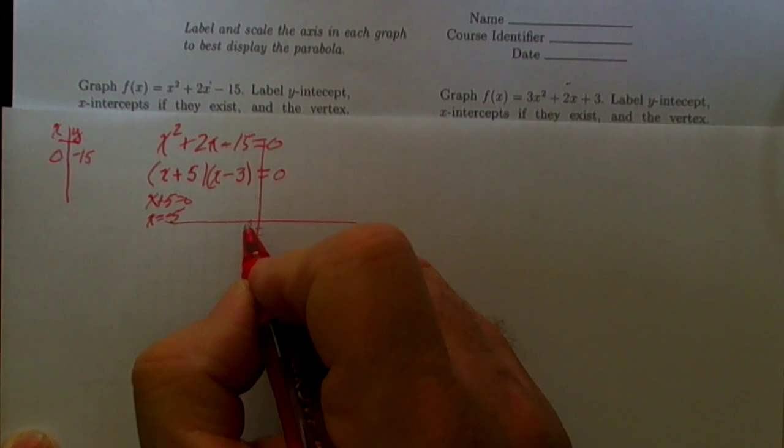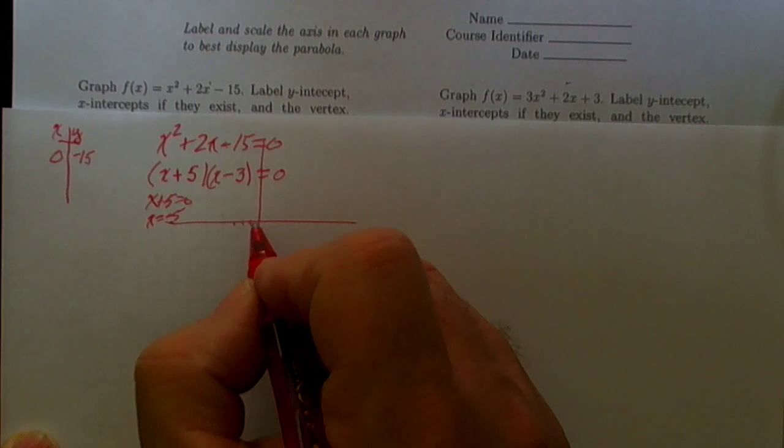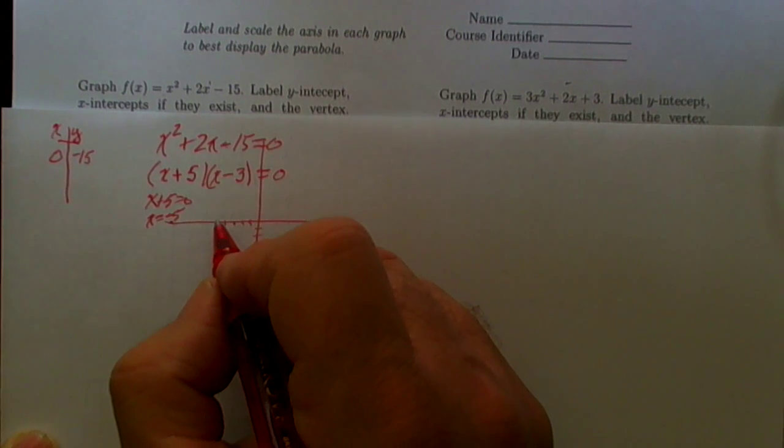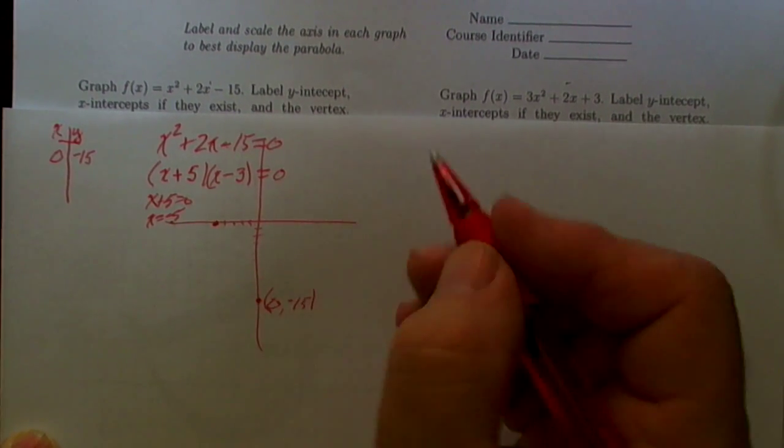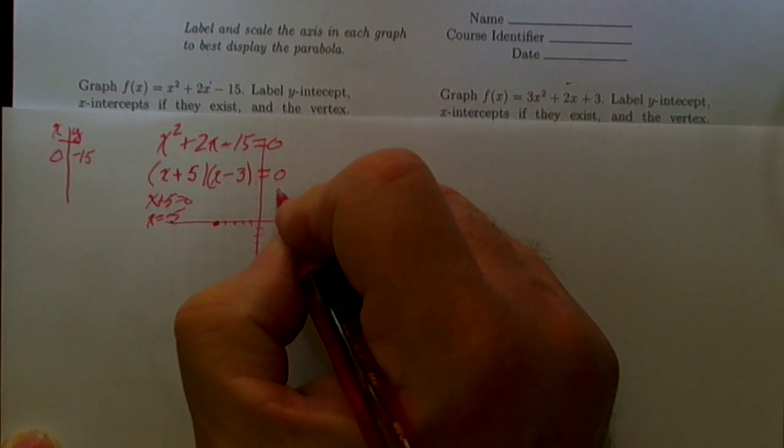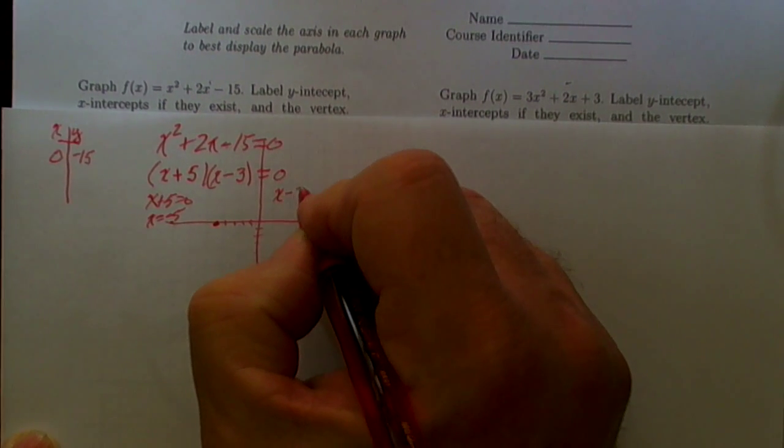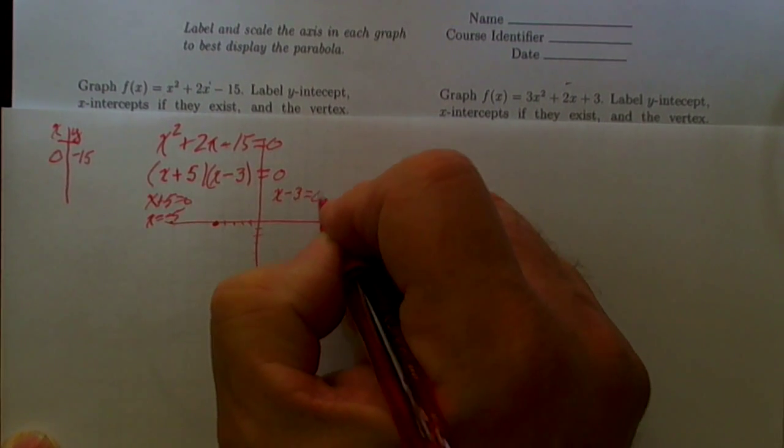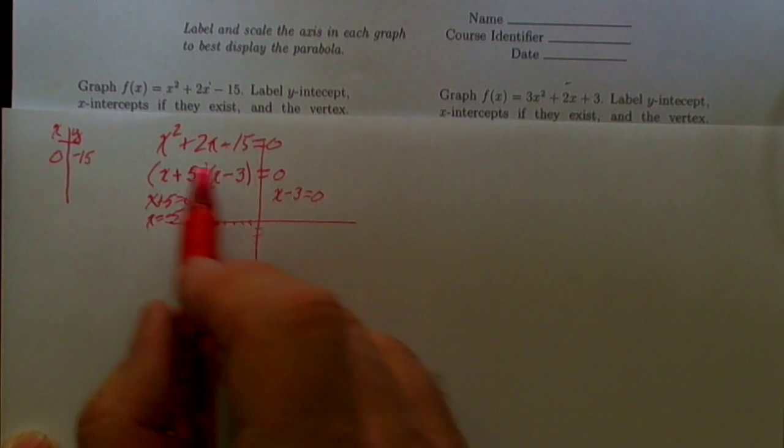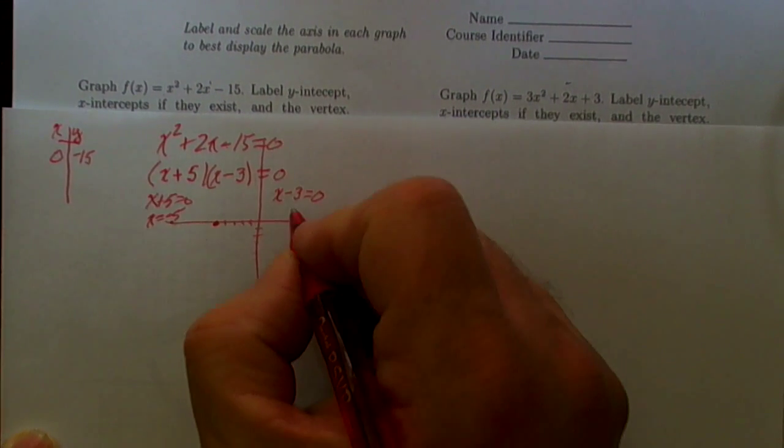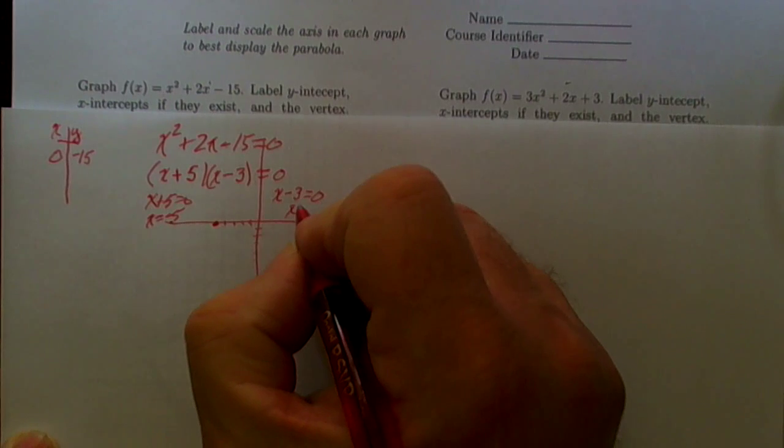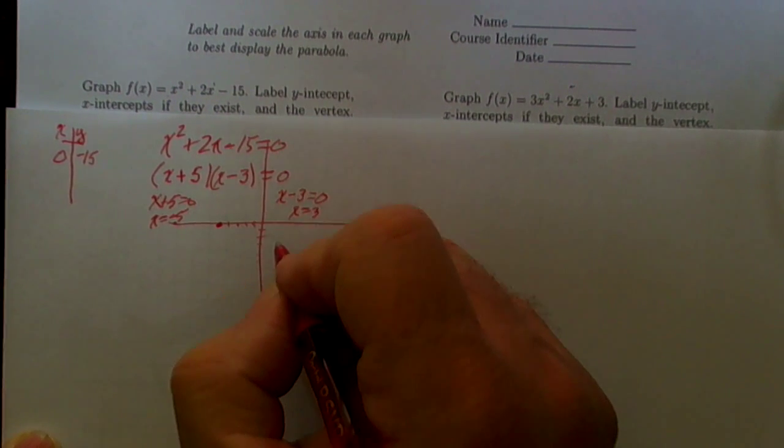That means that x + 5 could be 0 in which case x has got to be -5, so in our graph we need to be able to get over here to 1, 2, 3, 4, 5.